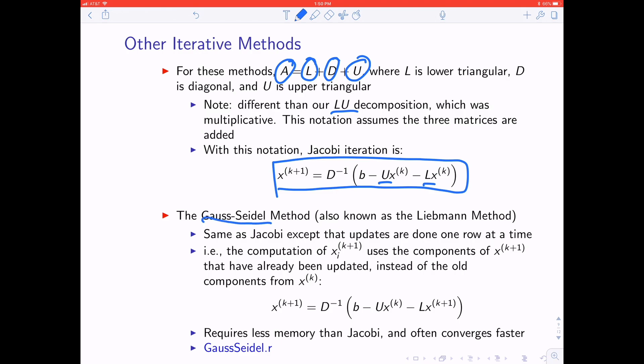So what Gauss-Seidel is, which also goes by the name of Liebman method, is the exact same, except the computation of XIK plus 1 uses the components of XK plus 1 that have already been updated. A mathematically equivalent way to write that is instead of taking LX acting on K here, you take L acting on XK plus 1. This turns out to require a little bit less memory than Jacobi and it can converge faster.